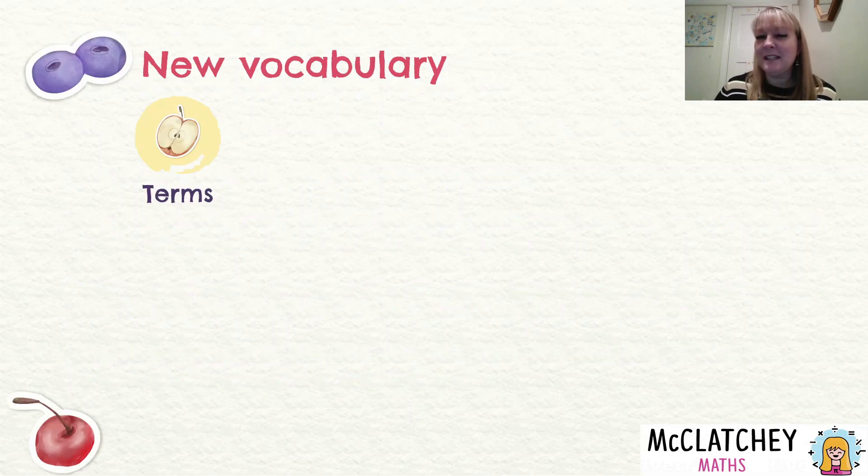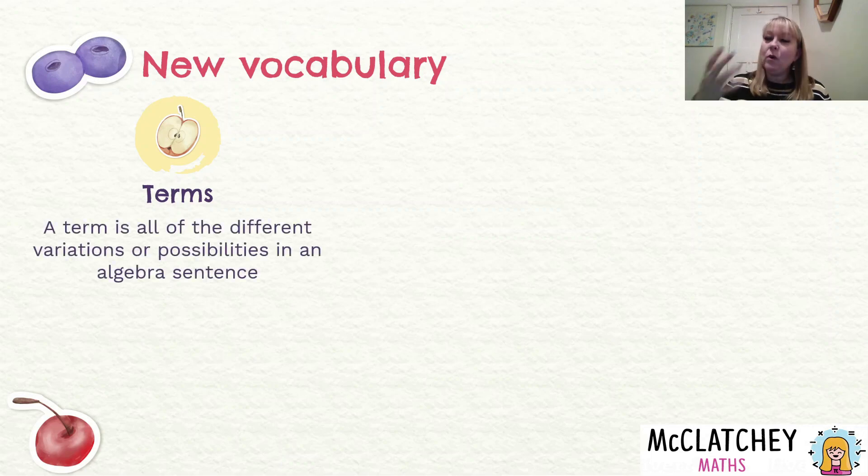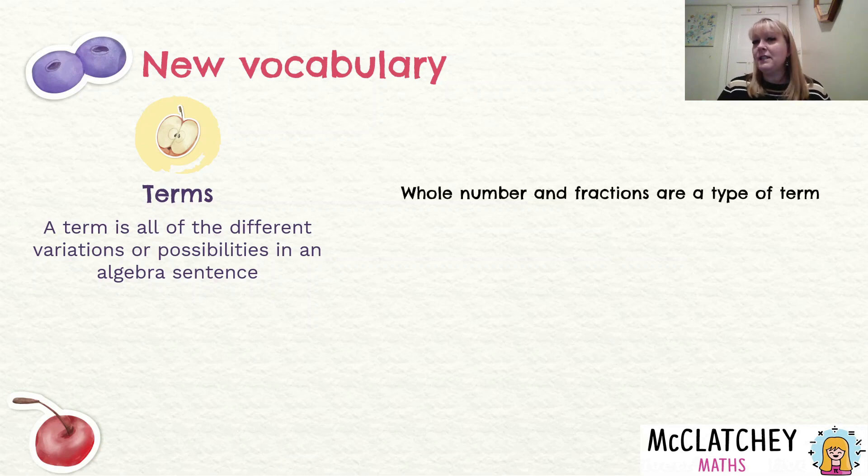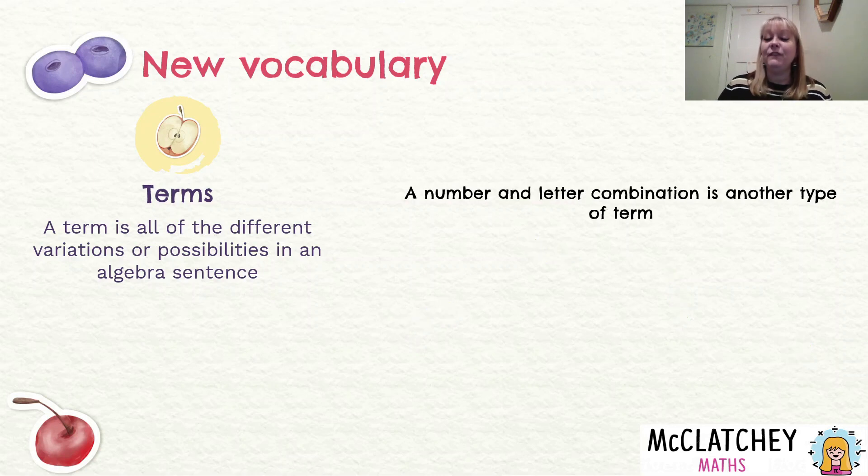So now that's what algebra is. Let's talk about some new vocabulary. The first one is we're going to come across this word terms. These are algebraic terms and what we call a term is all of the different variations or possibilities in an algebra sentence. Now that might not make much sense but let's talk about different kinds of terms and it will all start to sink in. So whole numbers and fractions and decimals, they're all types of terms. So the number 4000, 80.2, a half, 15, any number you can think of that we've been working with all the way through primary school and into high school. They're all what we call a term in algebra.